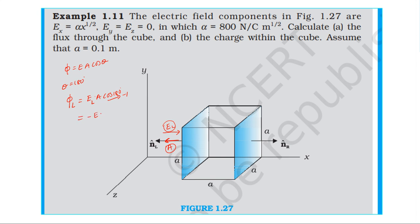The flux equals E into A times cosine theta. For the left face, the electric field equals alpha times x to the power one-half. At the left face, x equals a, so the field is alpha times a to the power one-half. The area is a squared. Therefore, the flux through the left face equals negative alpha times a to the power one-half times a squared.